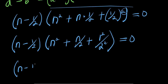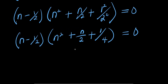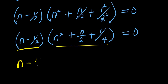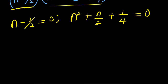So from here I have (n minus 1 over 2) times (n squared plus n over 2 plus 1 over 4) equals 0. Now I can equate each factor to zero. From n minus 1 over 2 equals 0, I can simply move this over: n equals 1 over 2. That's my n₁.